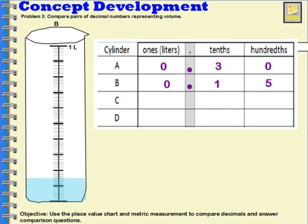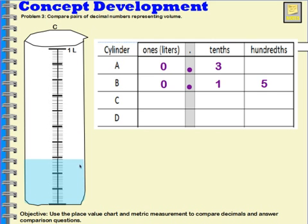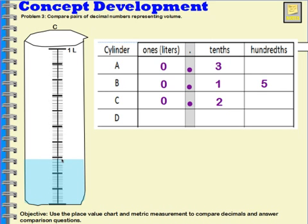Let's take a look at C now. It looks like it gets almost all the way to the three-tenths mark. So I have zero whole liters, I put in my decimal point. For the tenths I count: one, two — I have two whole tenths. And then there's only one part missing between the second and third tenth mark, so I'm one away from ten — that's nine-hundredths. So cylinder C has twenty-nine hundredths.